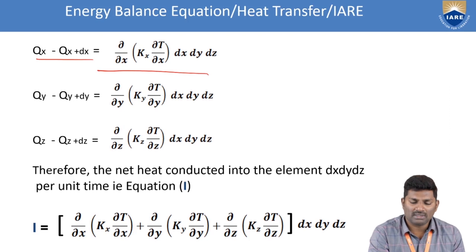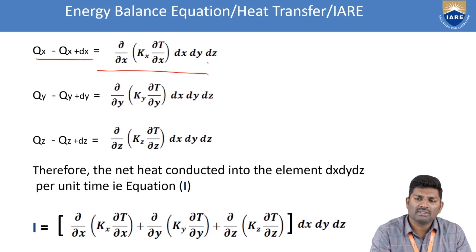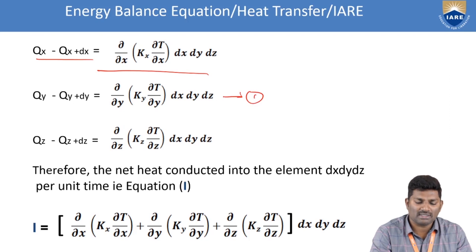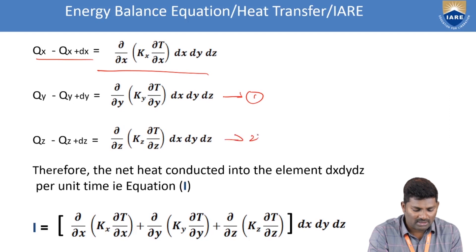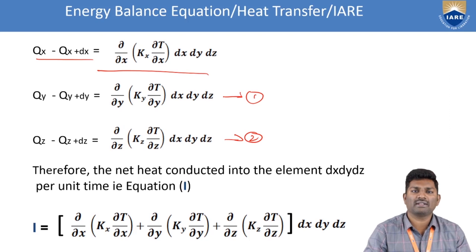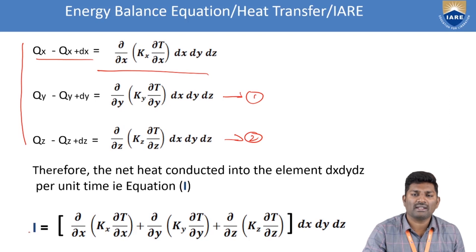Rearranging these terms, you get ∂/∂x(kx ∂T/∂x) dx dy dz for the x direction contribution. Similarly, the change in energy along y direction gives ∂/∂y(ky ∂T/∂y) dx dy dz, and along z direction gives ∂/∂z(kz ∂T/∂z) dx dy dz. The net heat conducted into the element is the summation of all three terms along x, y, z directions, giving the net heat conducted into element dx dy dz per unit time — that is the first equation.